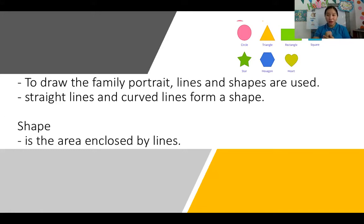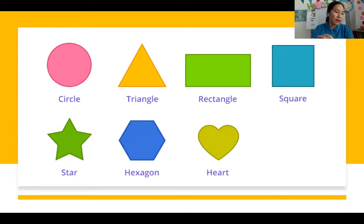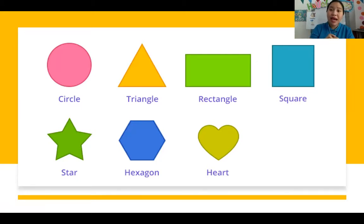Here are bigger examples of common shapes. We have a lot of shapes, but these are the very common ones: circle, triangle, rectangle, square, star, hexagon, and heart. They are all enclosed — you can see that they are closed with no openings.